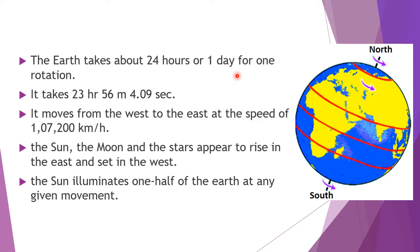That means day and night together make 24 hours. To be exact, it takes 23 hours, 56 minutes, and 4.09 seconds — some proportion of time is balanced, and we will study that later. The Earth is moving from west to east, and the speed at which it is moving is 1,07,200 kilometers per hour.